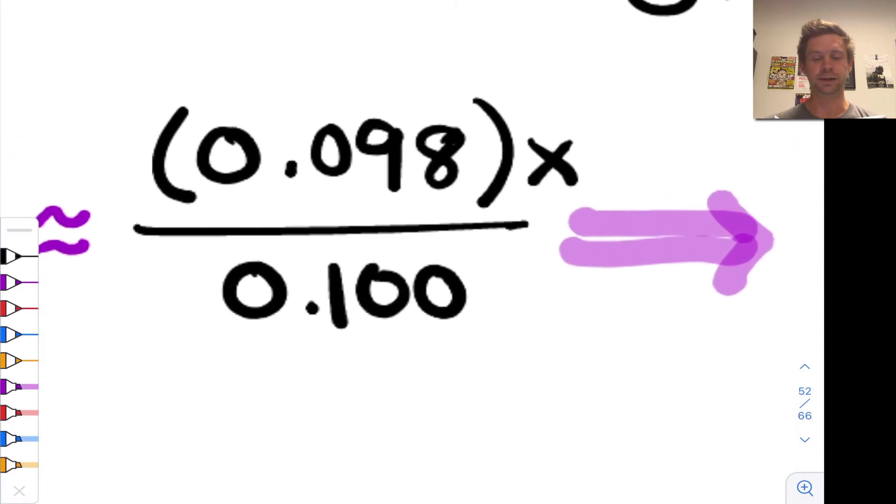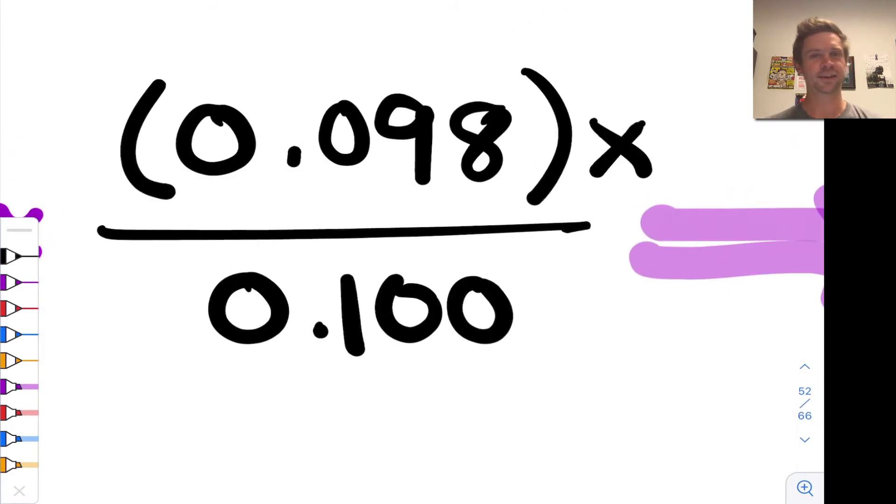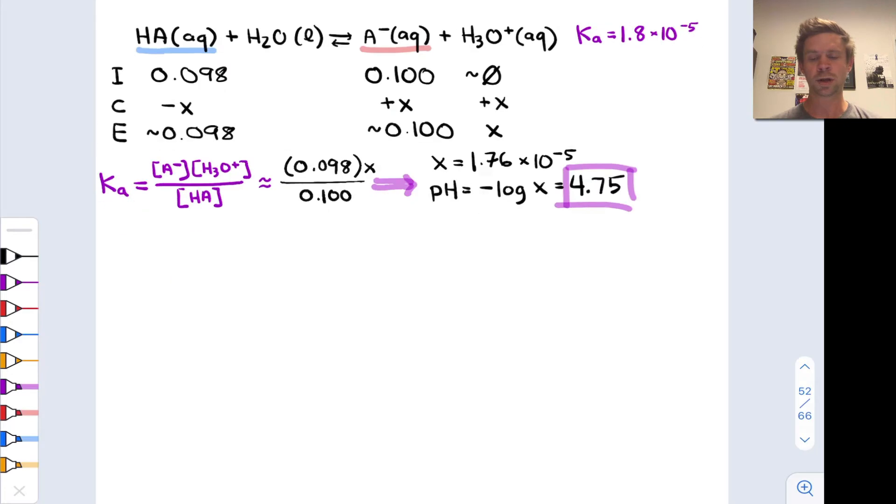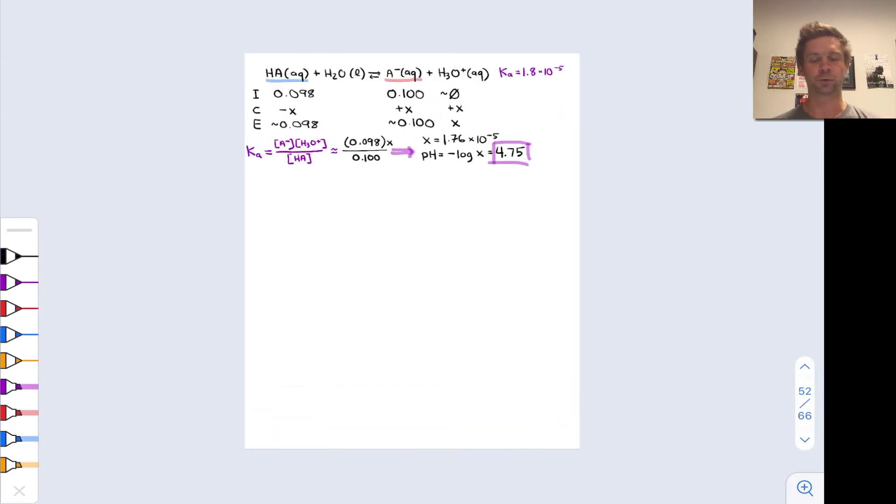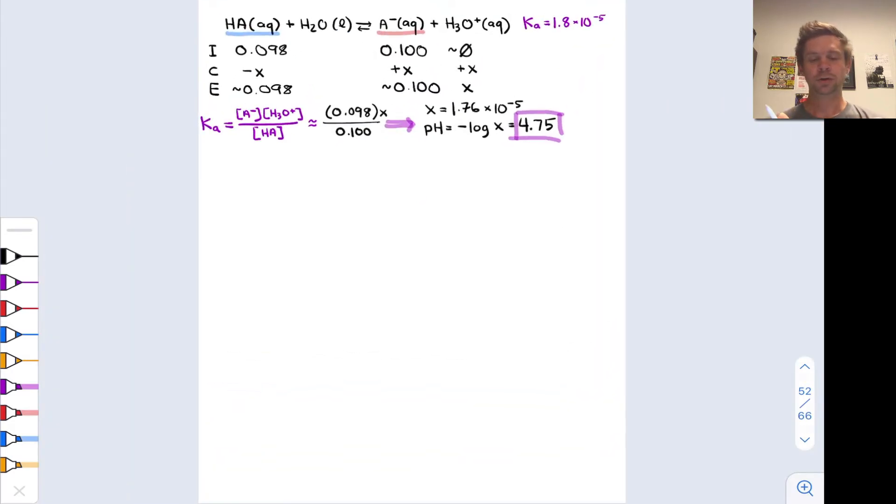And so again, in the reaction quotient, we simply plugged in those initial concentrations 0.098 and 0.1 to find the concentration of hydronium, and then the negative logarithm of that gave the pH at 4.75. So we're seeing here in both cases that the initial concentrations of the components of the buffer, HA and A-, could be simply plugged into the reaction quotient and the negative logarithm of both sides taken to determine the pH.